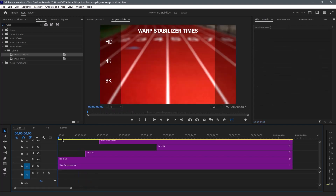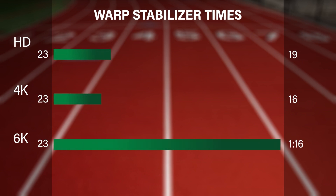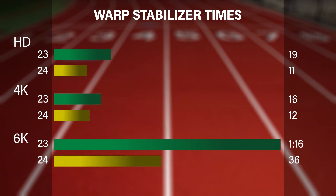So let's compare the results. These are the speeds using version 23: HD was 19 seconds, 4K was 16, and 6K was 1 minute 16 seconds. Holy smoke. So using the faster version — the current version in 24 — we can see 11 seconds, 12 seconds, and a whopping 36 seconds.